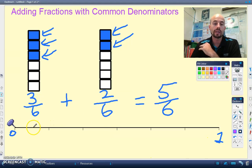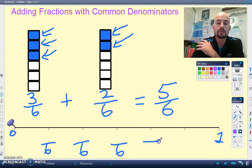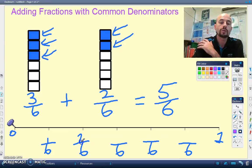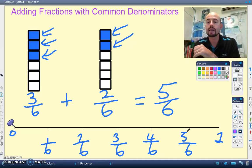If we count the pieces, not the lines. One, two, three, four, five, six. So we're talking sixths again. This would be one sixth, two, three, four, five. And six sixths is the same as one whole.